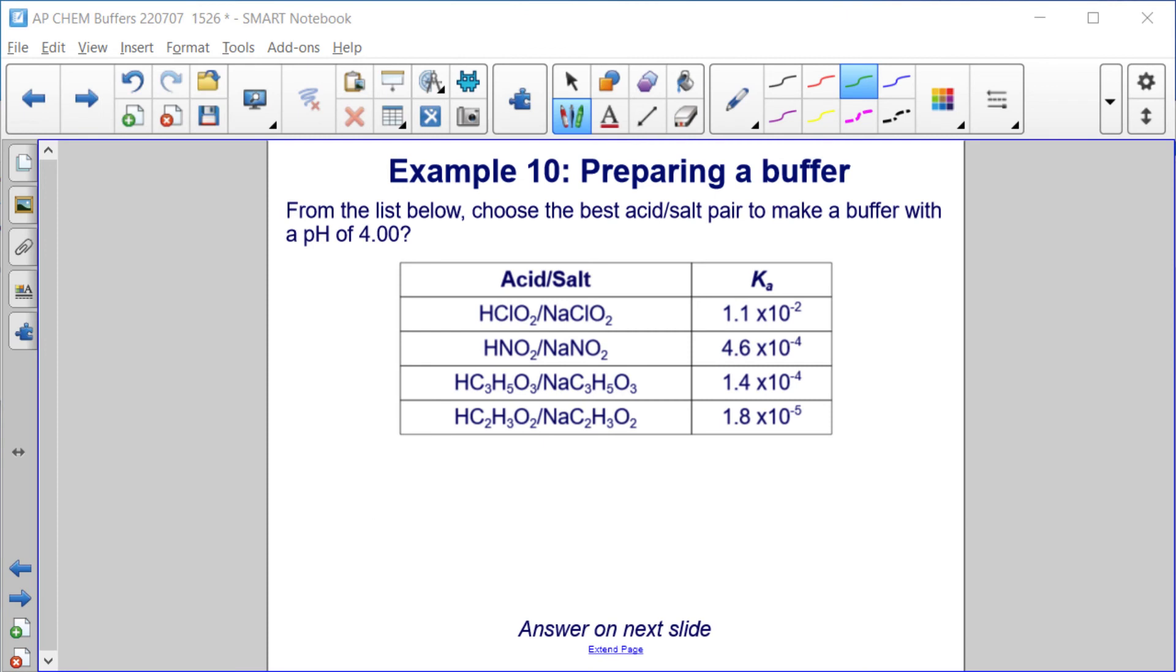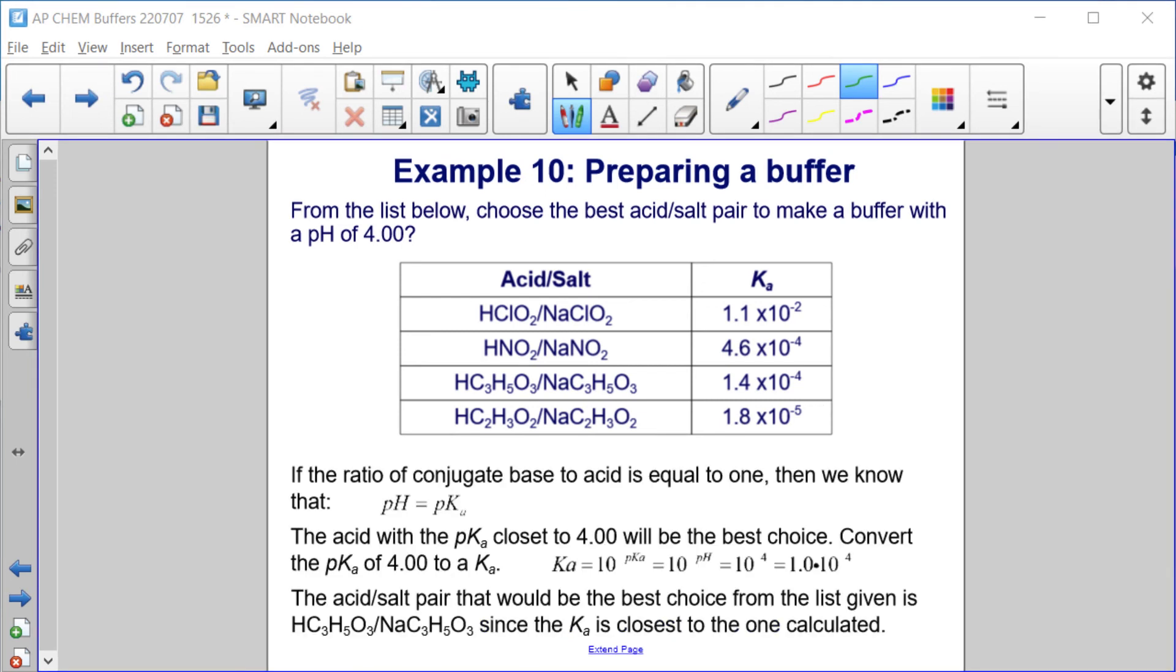Example 10, preparing a buffer. From the list below, choose the best acid-salt pair to make a buffer with a pH of 4. So, we have several acid-salt pairs with their Ka values. Let's use those to choose the best pair to make a buffer of pH 4. If the ratio of conjugate base to acid is equal to 1, then we know that the pH is equal to the pKa. The acid with the pKa closest to 4 will be the best choice.